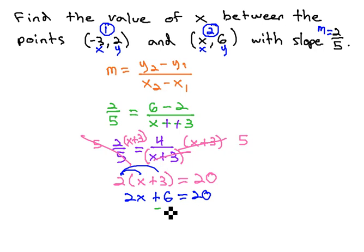Now, it's a two-step equation where we can subtract 6 to get 2x equals 14, and finally, divide both sides by 2 to find the missing value of x is equal to 7.